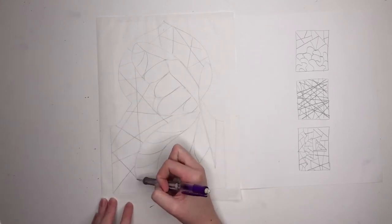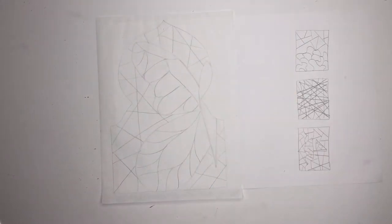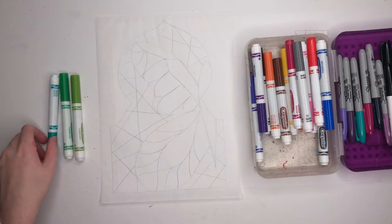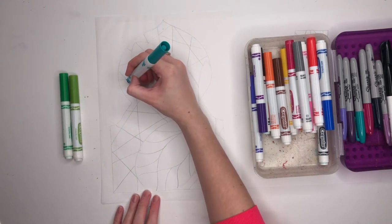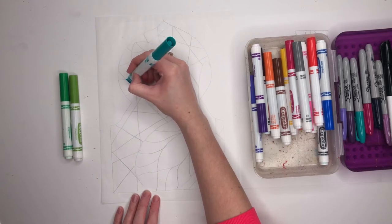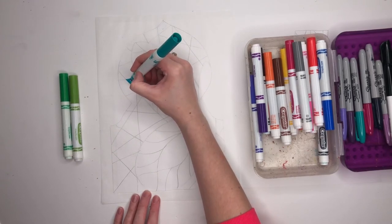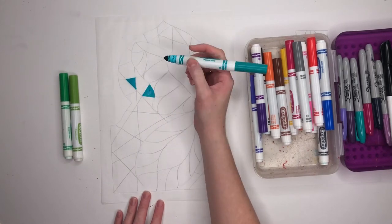Then color your design with marker. If you have a picture of something and you're worried about it all blending together, a good way to separate your picture from the background is to do one with cool colors and one with warm colors. I'm using cool colors for the background and warm colors for my butterfly.